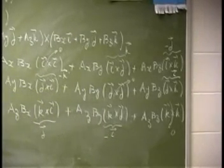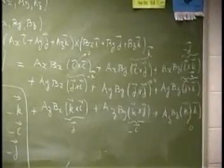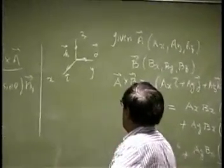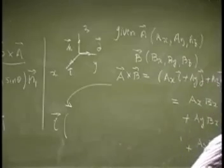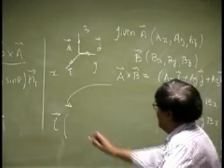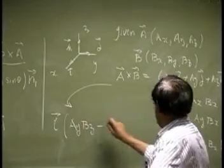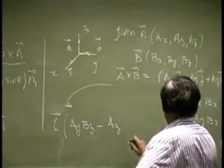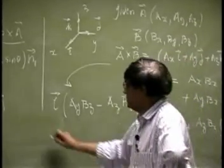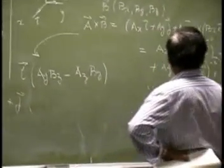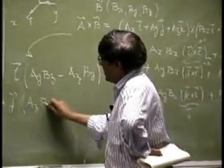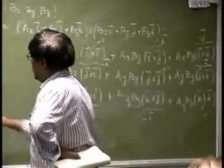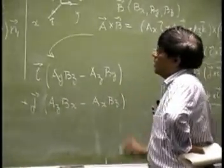And then if you assemble all of them together, this thing here will be, let's say we go with the i. So with the i you have Ay Bz, and then we have Az By, those are the two terms. Then you have this j, we should have this one here, that's Az Bx. Then there should be one more, that's Ax Bz. There should be...